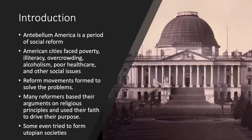Some examples of these utopian societies include Robert Owen's town, New Harmony in Indiana, which failed, and the Shaker Society, an offshoot of the Quakers, which also failed. However, regardless of their success, many of these reform movements were trying to change and improve society based on personal and oftentimes religious beliefs.